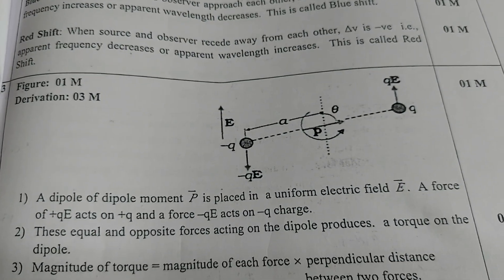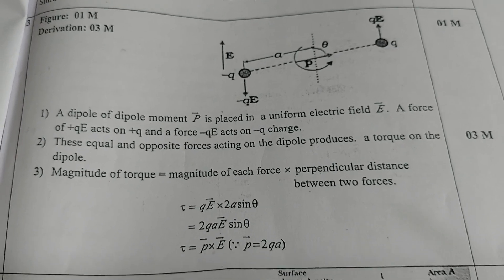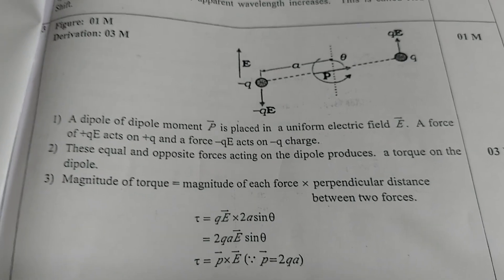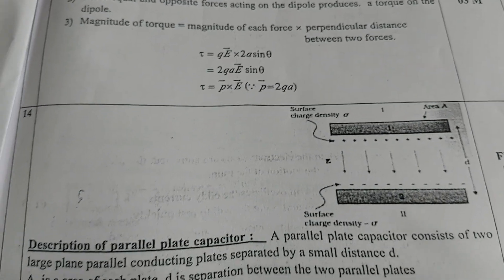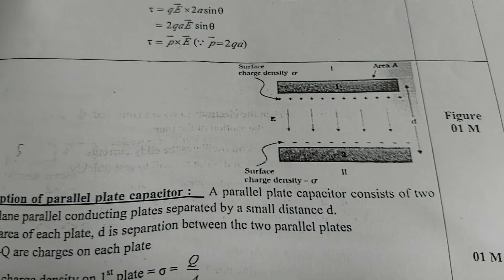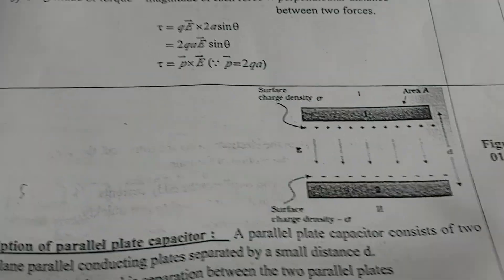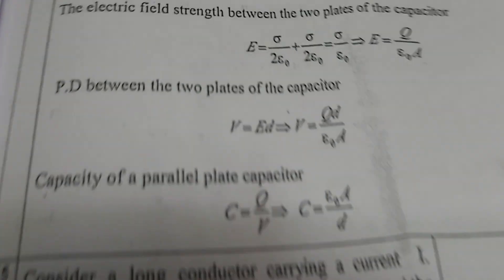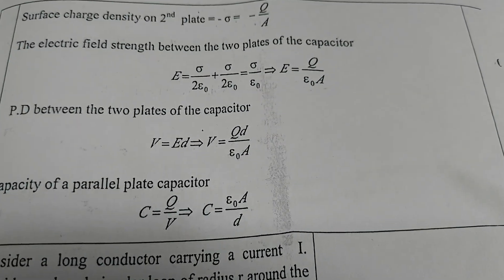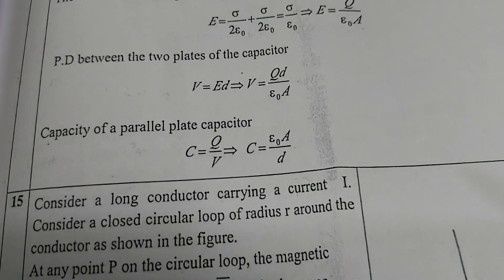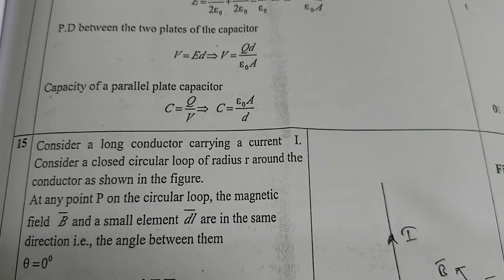The next question: figure one mark, derivation three marks. Diagram one mark, derivation and content three marks. Question number 14 — description of parallel plate capacitor: figure/diagram one mark, one mark for this part, formula one mark. The final conclusion and derivation formula carry one mark each. In this way the four-mark answer is split.